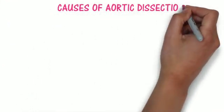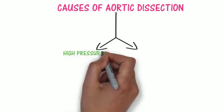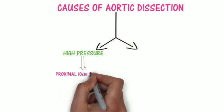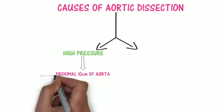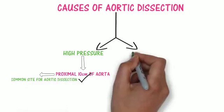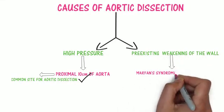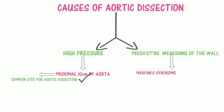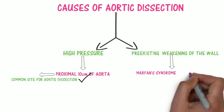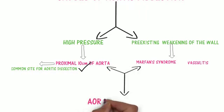Now let's look at the causes of aortic dissection. Two conditions must be fulfilled for it to occur. First, there must be high pressure in the region — this condition is fulfilled only in the proximal 10 cm of the aorta, which is why aortic dissection takes place there. Second, there must be a pre-existing weakening of the aortic wall, found in conditions like Marfan syndrome or decreased blood flow through the vasa vasorum as in certain vasculitis. This weakening combined with high pressure leads to aortic dissection.